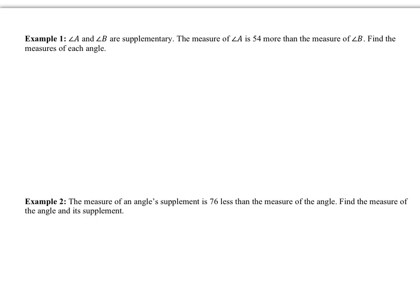This is a video for the examples for the end of lesson 1-5. For example 1, angle A and angle B are supplementary, so that means they add to 180. The measure of angle A is 54 more than the measure of angle B. Find the measures of each angle.